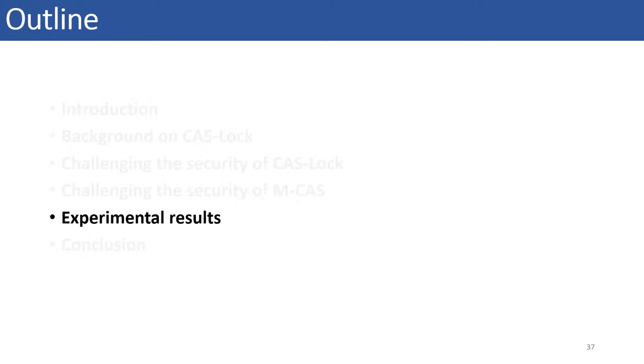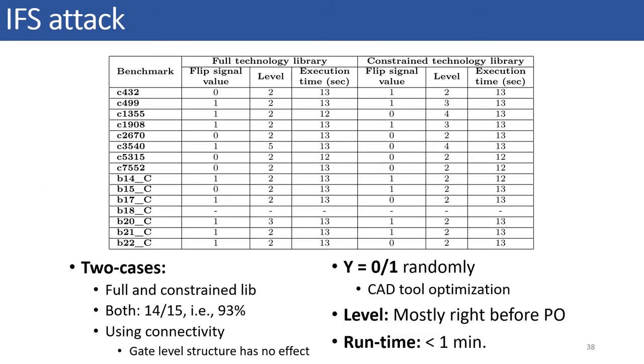Next, we move on to the experimental results for the three attacks proposed in this work. We launched our IFS attack on total of 15 circuits from ISCAS 85 and ITC 99 benchmark suite synthesized with full library and with only two input gates constraint library on CAS defense and collected the results for flip signal value, the level at which the flip signal was found from the output port and the time taken by the attack. As we can see, synthesis induces changes in the value of flip signal from 0 to 1. Hence, assuming the value of Y to be always 0 is incorrect and hence launching our IFS attack is pivotal to know the correct value of the Y signal. Further, we also observed that when primary output port is protected, then the flip signal lies at at most level 3 from the primary output port. Lastly, the time taken by our IFS attack is less than 15 seconds.